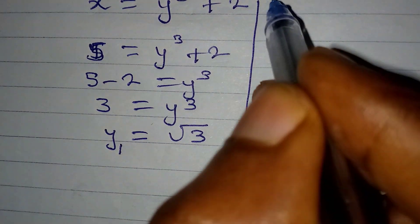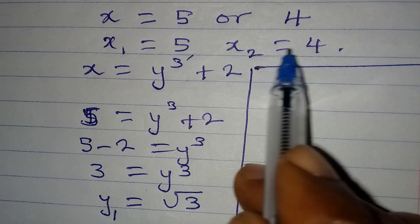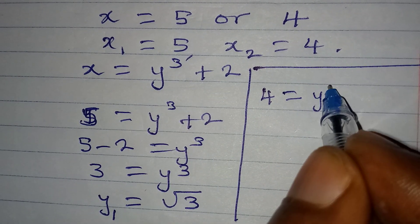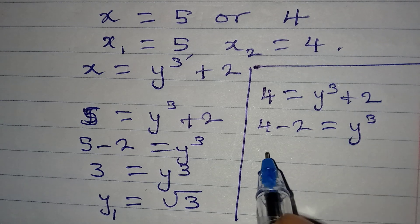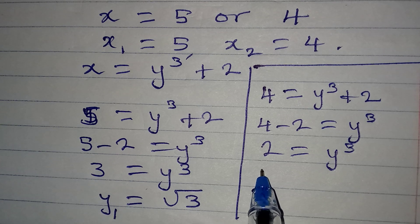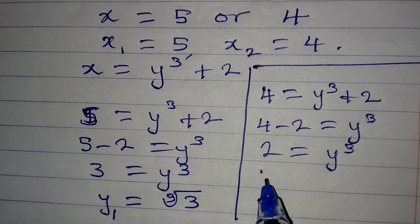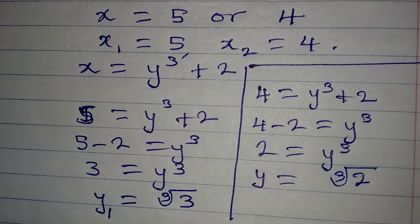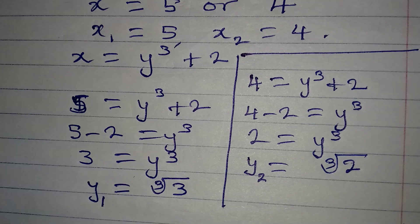Now for y₂, using x = 4: 4 = y³ + 2, so 4 - 2 = y³, giving y³ = 2. Therefore y₂ = ∛2. We write the cube root symbol with the 3 in the radical.